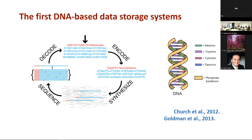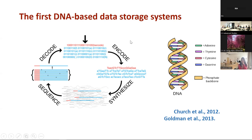What did the teams from Church and Goldman's group do? They took only one strand — single-stranded DNA — and they took every pair of bits from the information they wanted to store and converted it into one of the four letters, since with two bits you can encode four symbols. So 00 might be A, 01 might be T, and so on. They then contacted a commercial company like IDT or Twist and told them to synthesize the DNA for them.